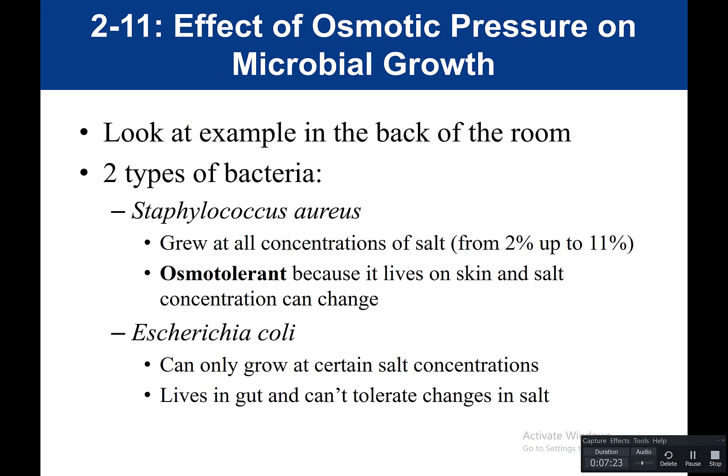The next experiment looks at the effect of osmotic pressure on microbial growth. This would also be set up in the back of the classroom for you to observe and quantitate the amount of growth. We have two types of bacteria: Staphylococcus aureus and E. coli. When we grew Staph aureus under different salt concentrations, it grew at all concentrations tested, from 2% salt all the way up to 11% salt.